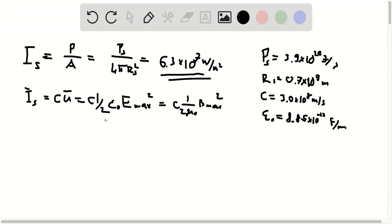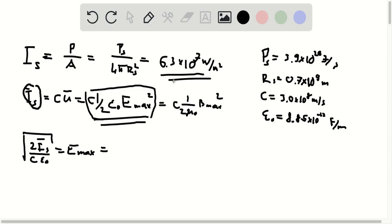So first, we're just going to use this relation here. So rearranging this for E max, we find that we have 2 times I bar of the sun divided by C and epsilon 0, and then square root it is equal to E max. So again, here I've just rearranged this expression, being equal to this expression of I bar s, for which we have already calculated the value.